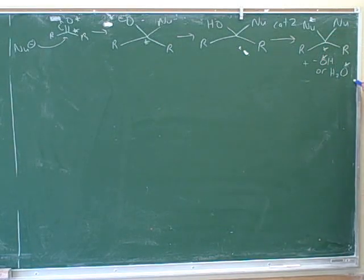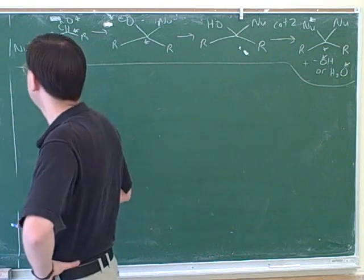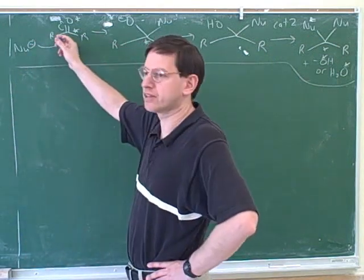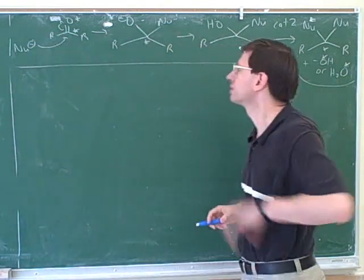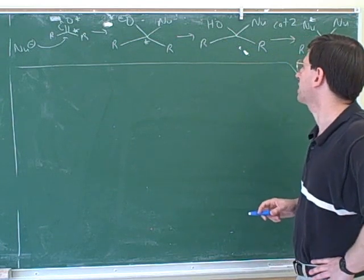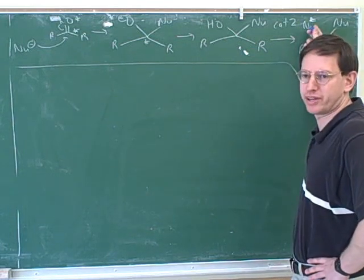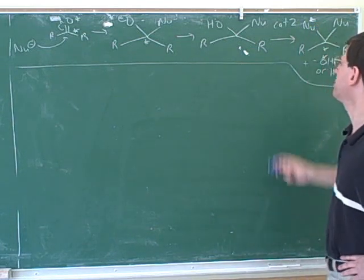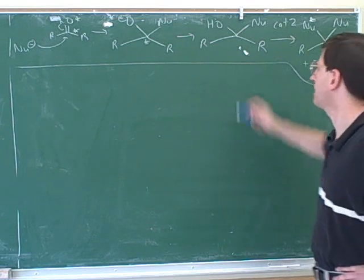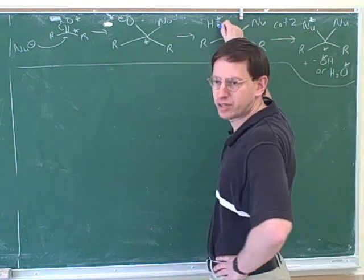As a reminder, here's the general pattern for category 2. Just like with category 1, the nucleophile is going to attack and break the pi bond. But then, since this is now category 2, a second separate nucleophile will come in. In order to make room for that second nucleophile, we're going to have to kick off the carbonyl oxygen completely.